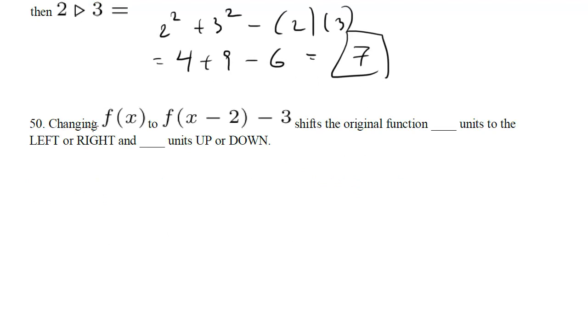Now for our transformations problem, changing f of x to this shifts the original function. Well remember when you've got it inside the parentheses, it's going to move it left or right. And when it's minus, it moves it to the right, so this is 2 units to the right. And then when it's outside the parentheses, it moves it up or down. And when it's a minus, it moves it down, so this is 3 units down.